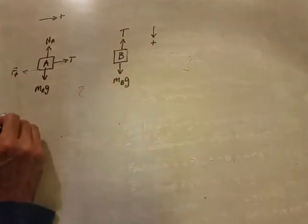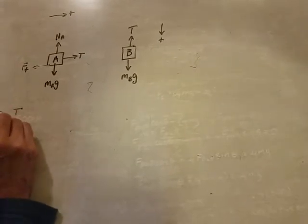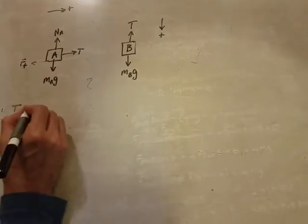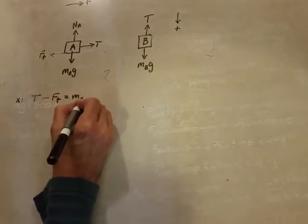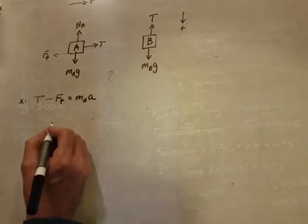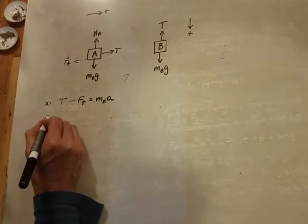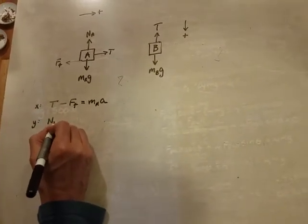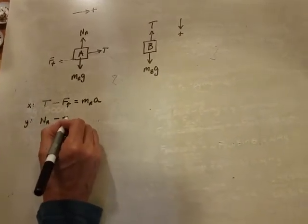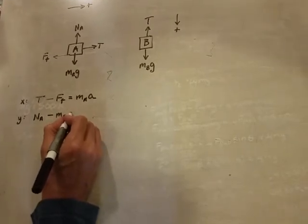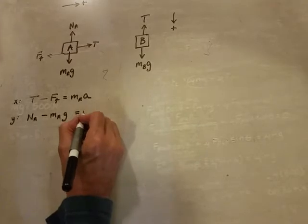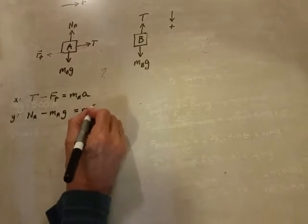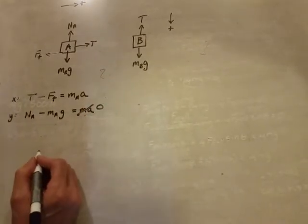Our equation in the x direction will be T minus friction equals mass of A times acceleration. In the y direction, we're going to have the normal force minus MAG is equal to MA, which is zero because it's not moving in that direction.